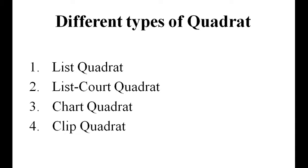List Quadrat involves enlisting the names of different species growing in the quadrat. In List-Count Quadrat, it records the number of individuals of each species represented in each quadrat.